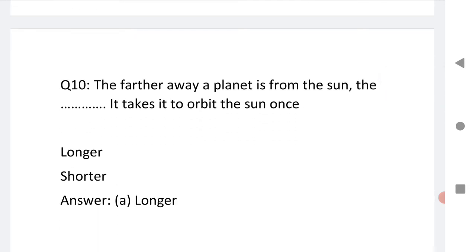Next: the farther away a planet is from the sun, the longer it takes to orbit the sun once.